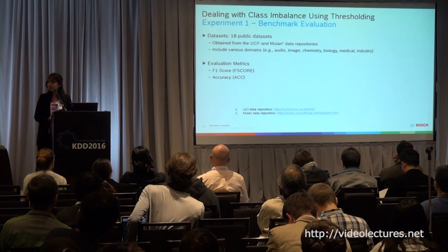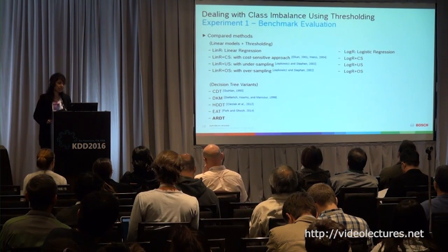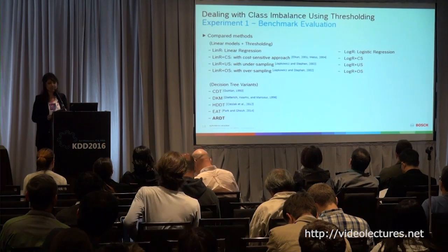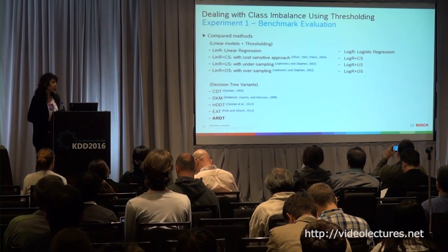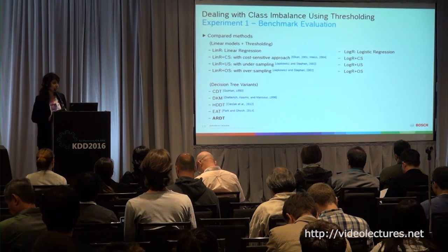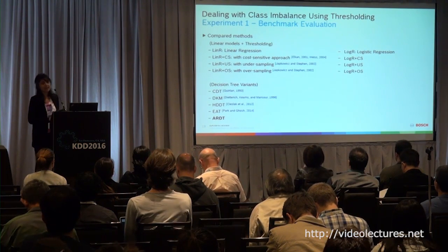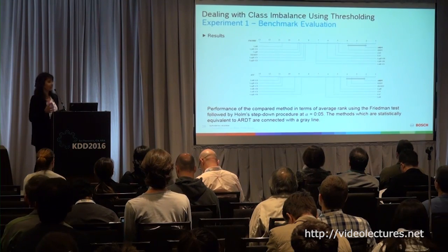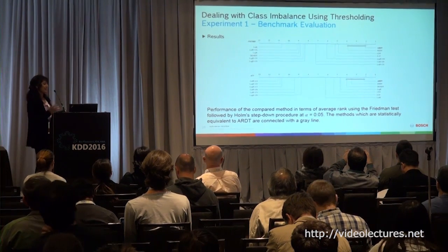We compared different methods: linear regression, linear regression with cost-sensitive approach, linear regression with undersampling, oversampling, logistic regression, logistic regression with cost-sensitive approach, and many decision tree variants including the standard decision tree, DQM-based decision tree, Hellinger distance-based decision tree, symbol alpha decision tree, and our method — the adaptive Renyi decision tree. Our method performed significantly better than most of the methods, and decision trees in general performed better than others.